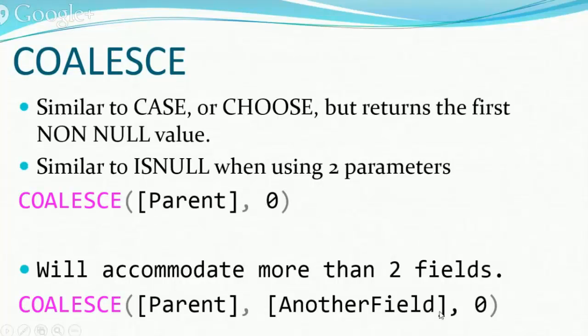COALESCE will accommodate more than two fields. You can say parent — if it's null, then look at this other field. Otherwise, if that's null, then let's return zero.